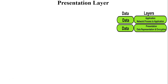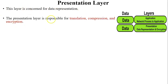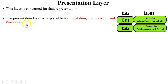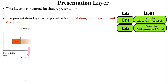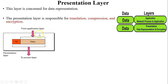Next is the presentation layer — it is the sixth layer of the OSI model. As the name suggests, this layer is concerned with data representation. The presentation layer is responsible for translation, compression, and encryption. Translation means data will be converted from human language to machine language, or binary language. Compression means before sending large data, the data will be compressed — its size reduced. Encryption means before sending the original data, it is converted to a non-readable encrypted form and then sent to the receiver.